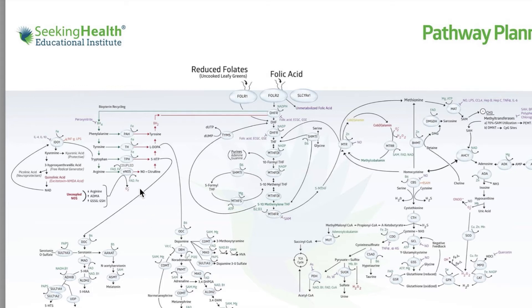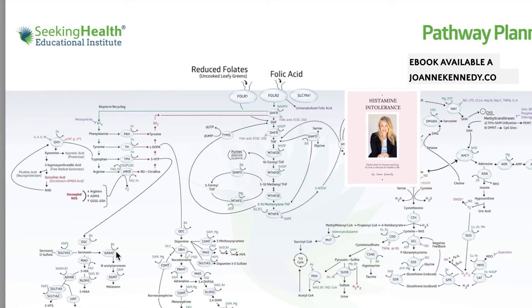We need to be consuming tryptophan, which is an amino acid. It gets converted by this enzyme with iron to make 5-HTP. 5-HTP will then go on with vitamin B6 to make serotonin.